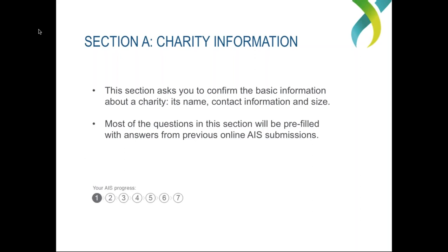One important thing to note about this section is it asks you to confirm your contact address and your address for service. Your address for service is important because that's the address we use to send formal documents and notifications. For example, we send reminder letters and emails in the months leading up to the AIS submission date, so having the address for service up to date ensures you don't miss those important notifications.